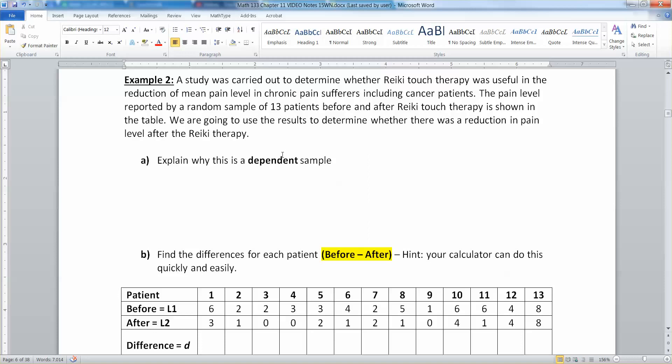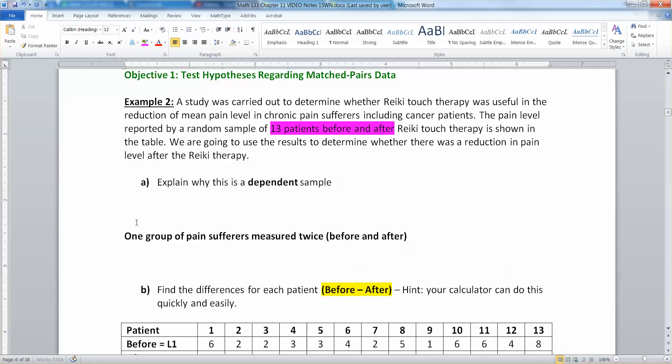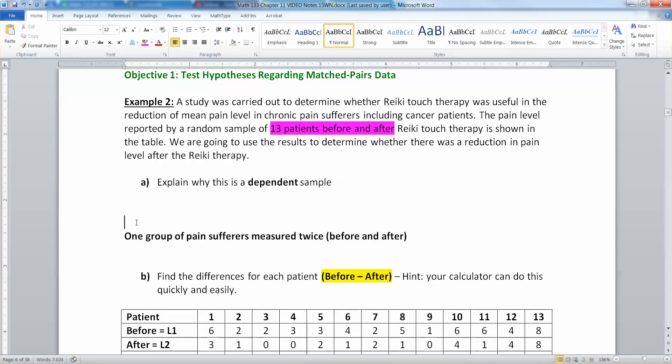All right, so it's a dependent sample because it's the same group of patients measured twice. Namely, you have these 13 patients and they're measured before and after. You can see that right there. So that before and after is what makes it a dependent sample. It's one group of pain sufferers measured at the beginning and at the end. That's a dependent sample. All right, well that's done. That's pretty simple.